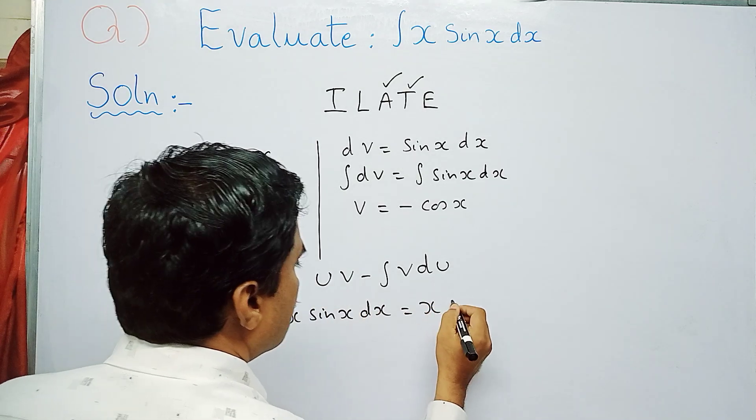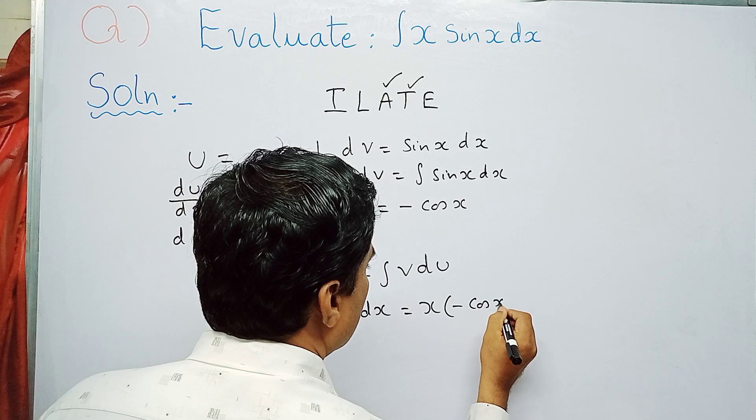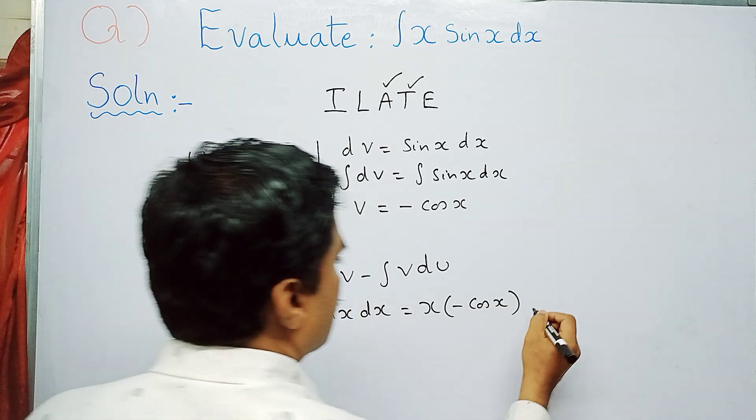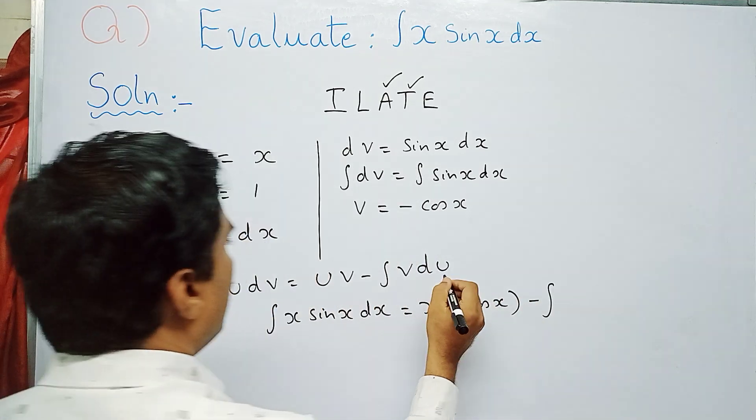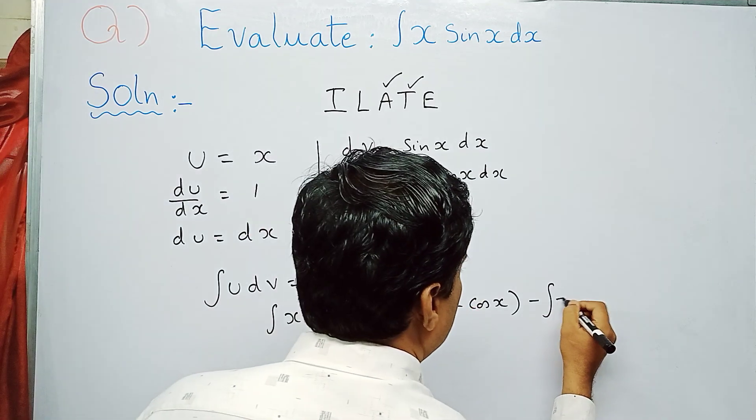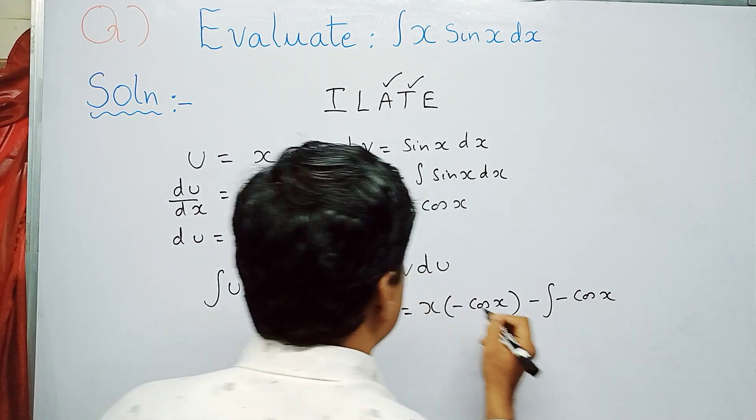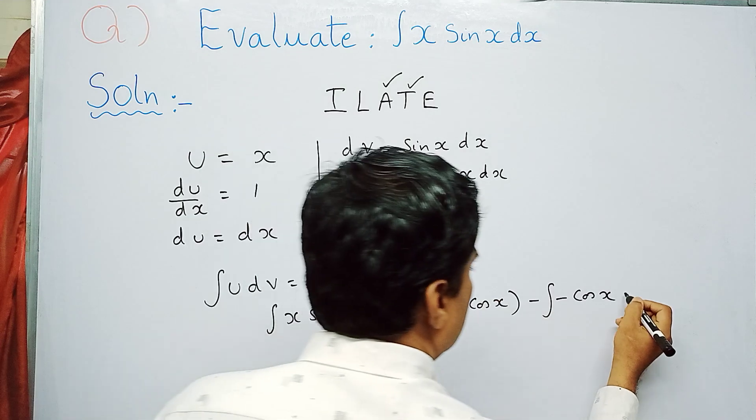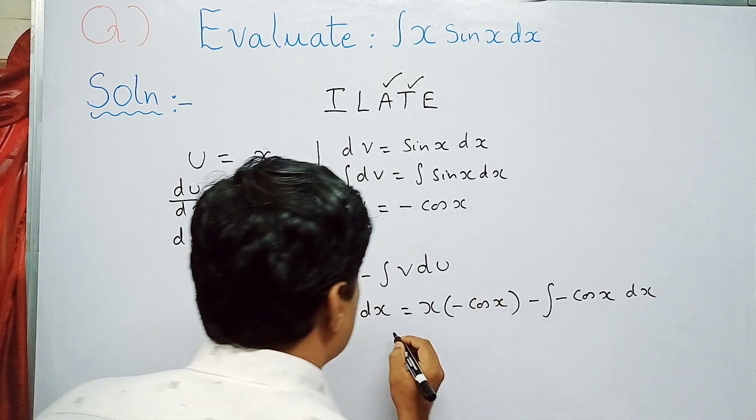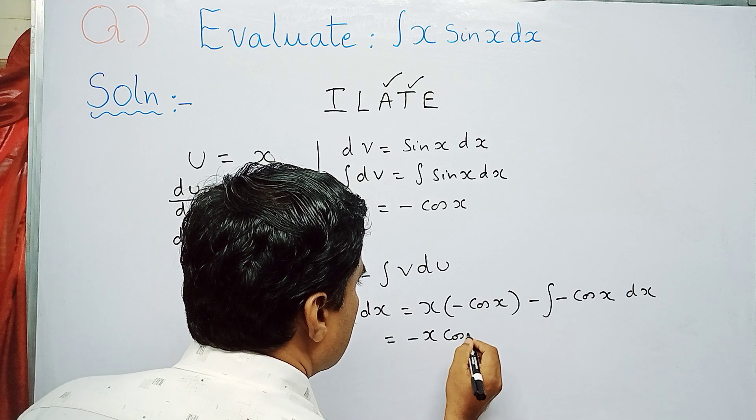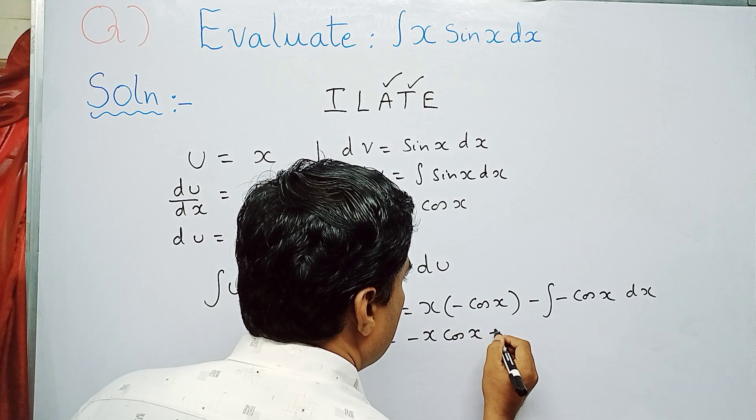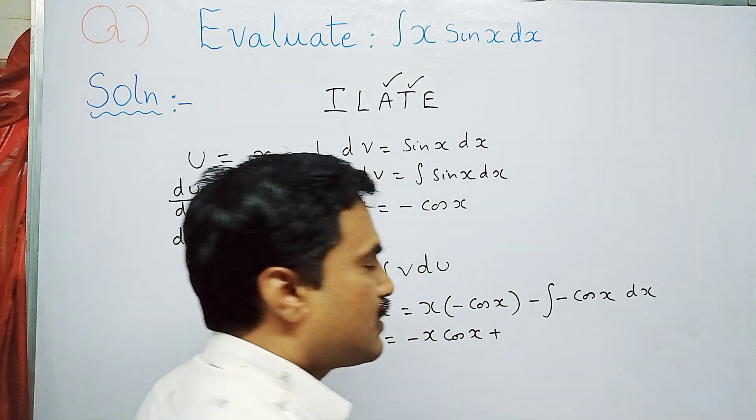u is x and v is minus cos x. So we get minus x cos x minus integral of minus cos x dx. This equals minus x cos x minus negative, which is plus. The integration of cos x dx is sin x plus c.